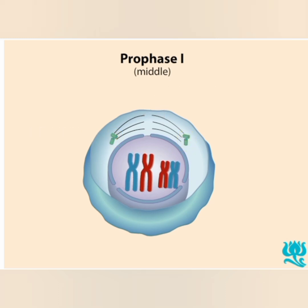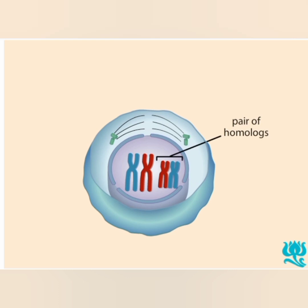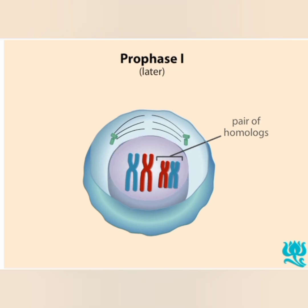This diploid cell contains homologous chromosomes, which pair up later in prophase 1. One chromosome in each pair is maternally derived, indicated by blue, and one is paternally derived, indicated by red. The pairing is called synapsis. At this time as well, the nuclear envelope breaks down. Late in prophase 1, the homologous chromosomes exchange genetic material, as indicated by crossing over points called chiasmata.